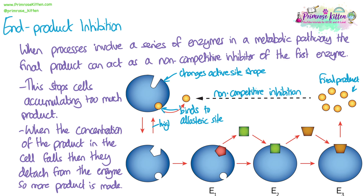The final product binds to the allosteric site — away from the active site — and changes the active site shape. You can see it goes from a kind of pentagon shape to a scoop or bucket shape. When there is a high concentration of the product, enzyme one has this scoop shape because it has the final product bound to it as a non-competitive inhibitor. When the concentration drops to a low level, we go back to the pentagon-shaped active site and the non-competitive inhibitor is detached.